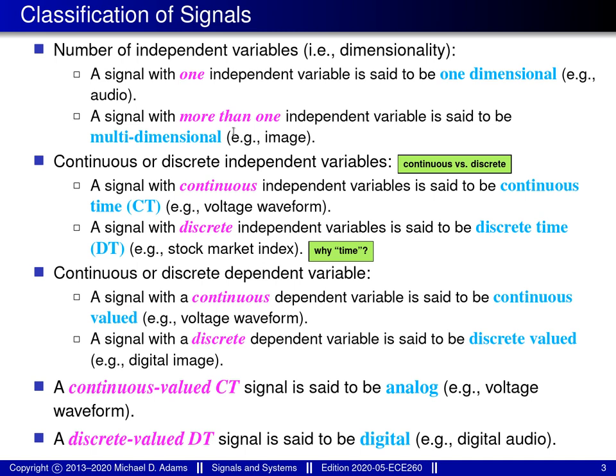A signal with more than one independent variable is said to be multidimensional. An example of a multidimensional signal would be an image, where you have light intensity as a function of horizontal and vertical position. Horizontal position would be one independent variable, vertical position would be the other — so there are two independent variables, which is more than one, making this a multidimensional signal.